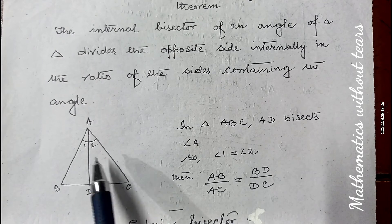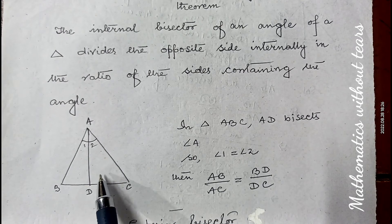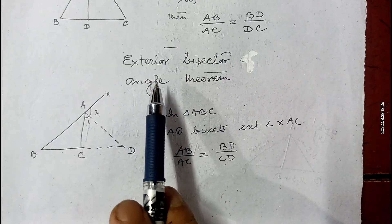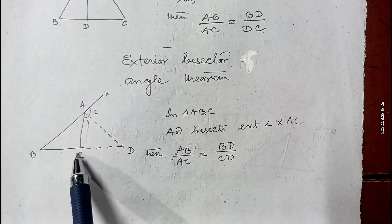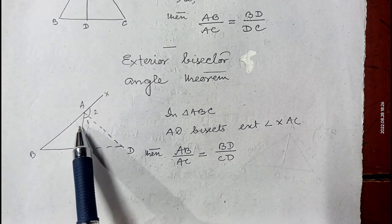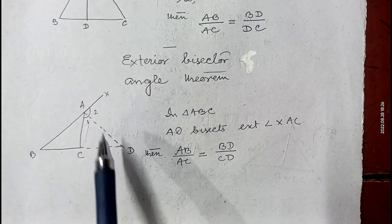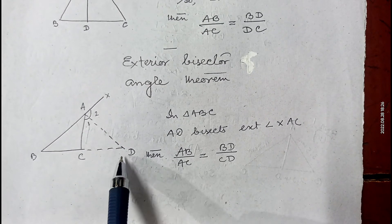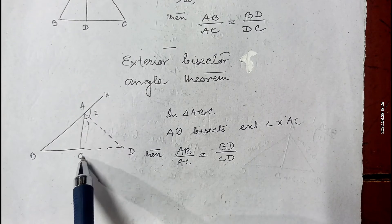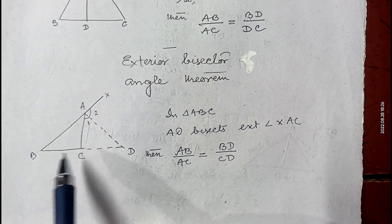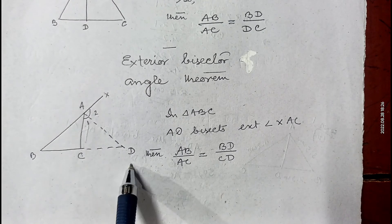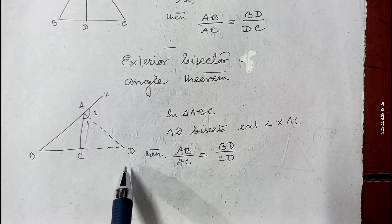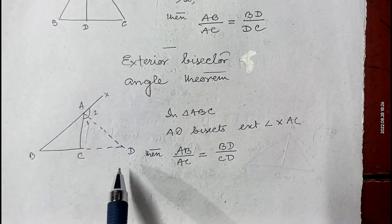In that case, AB by AC equals BD by DC. This theorem is called the Internal Bisector Angle Theorem. In the case of the Exterior Bisector Angle Theorem, suppose ABC is a triangle in which angle XAC is the exterior angle and AD is the bisector of this angle. So AD has bisected angle XAC, and in that case AB by AC equals BD by DC. This is called the Exterior Bisector Angle Theorem, and sums of 6B are based on these two theorems.